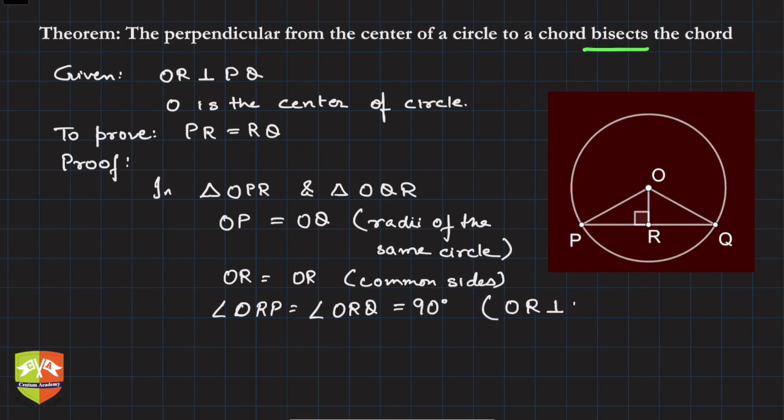Why? Because we know that OR is perpendicular to PQ. This was given. Hence, by which property? If you see there's a 90 degrees, there is a hypotenuse OR, and another side, hence we say